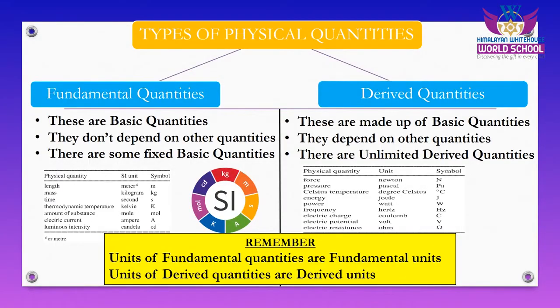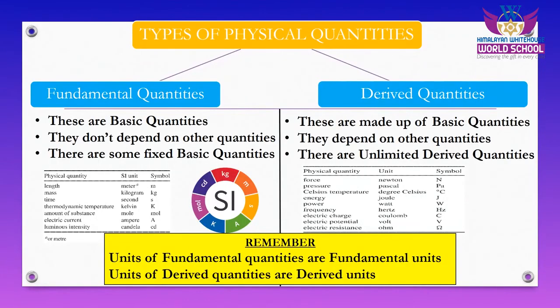Derived quantities are made up of the combination of fundamental quantities, just like a word is made by the combination of letters. Since derived quantities are combinations of different fundamental quantities, they depend on other quantities. And there are unlimited derived quantities.